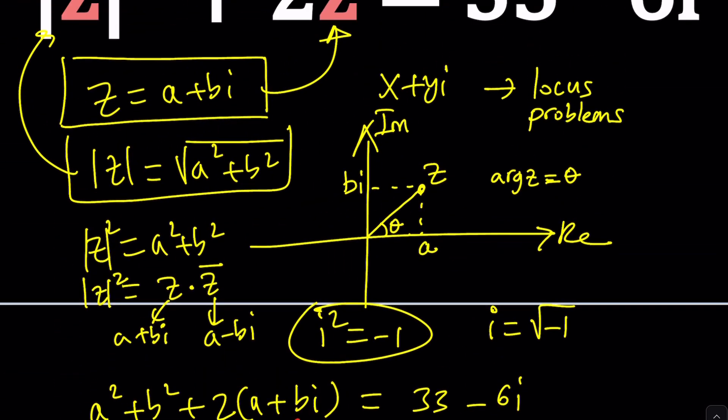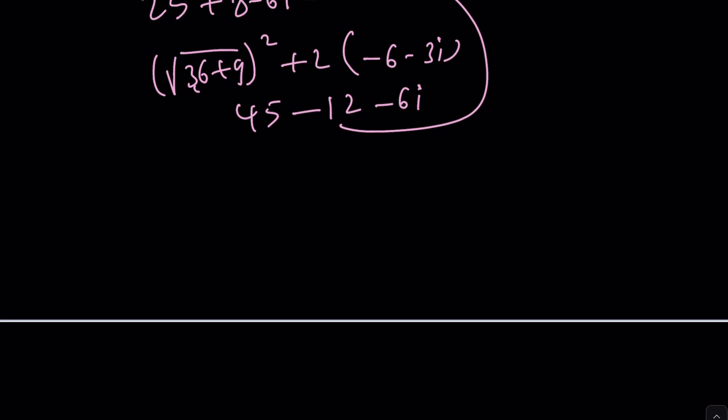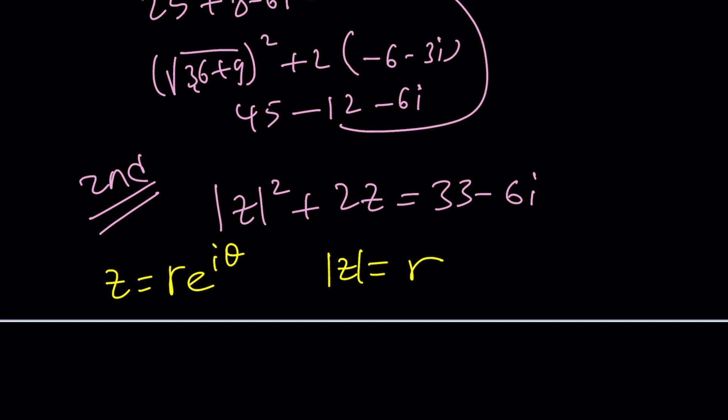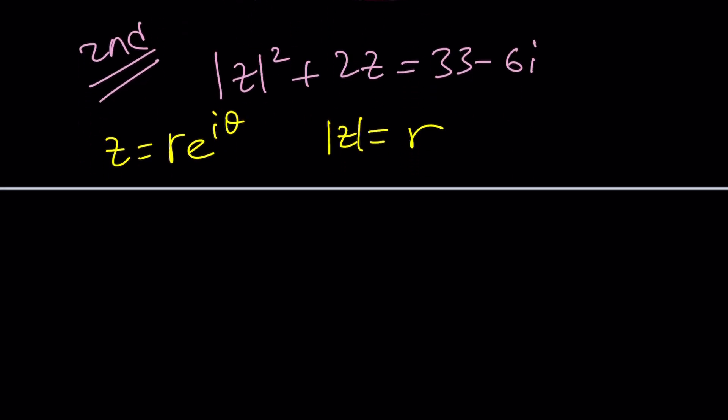So let's go ahead and quickly look at a second approach, an alternative for this problem. We'll briefly take a look at it. We don't need to complete it because we're running out of time. The clock is ticking. So now if you replace z with r e^(iθ), basically absolute value of z is the same as r, which is also called the modulus. Can we do this? Well, let's give it a try. If you replace the absolute value of z with r, you're going to get r squared, and then z is just going to be r e^(iθ). And this is supposed to equal 33 minus 6i. Here's the challenging part.